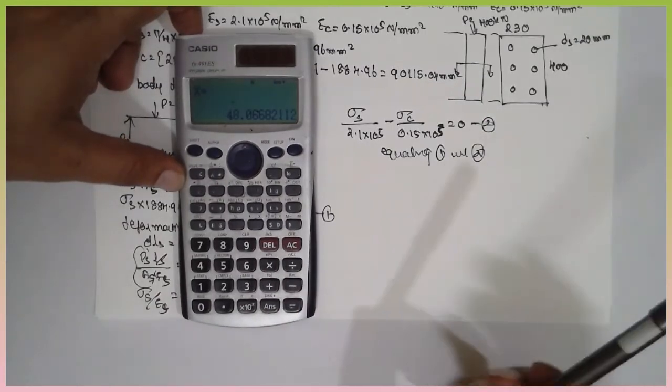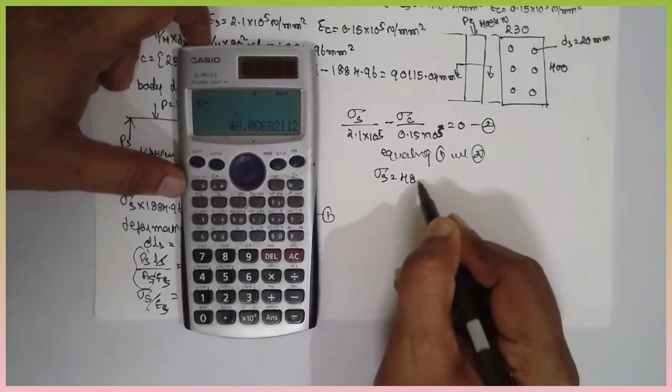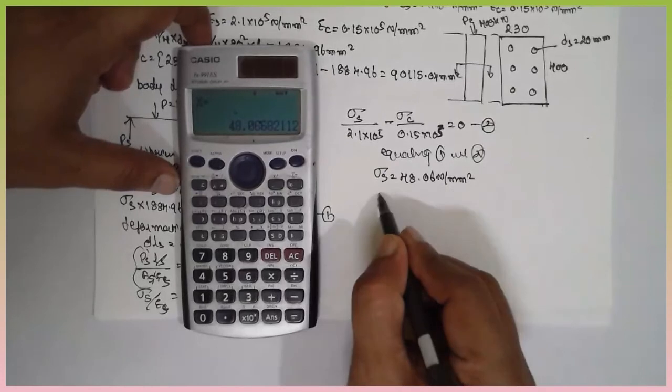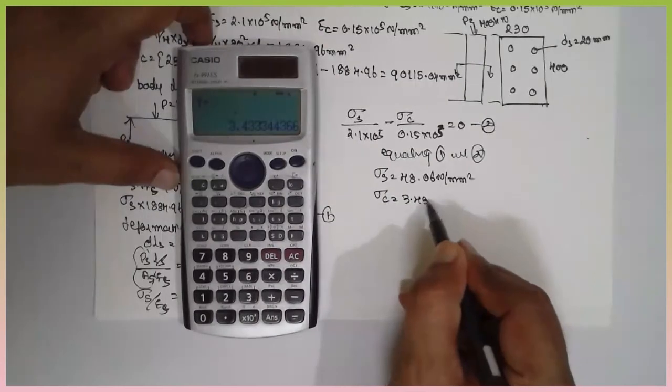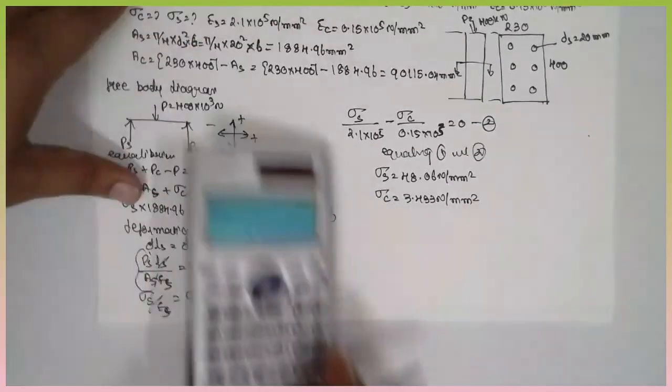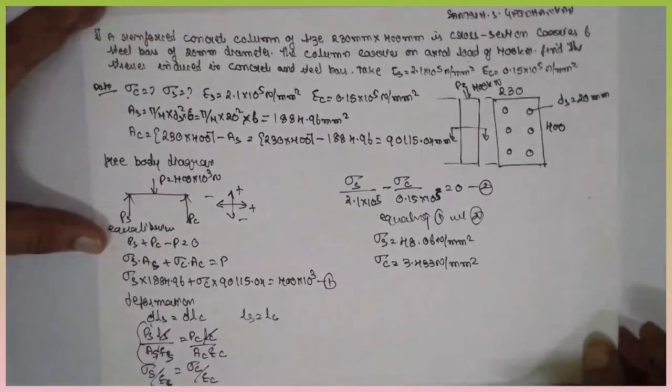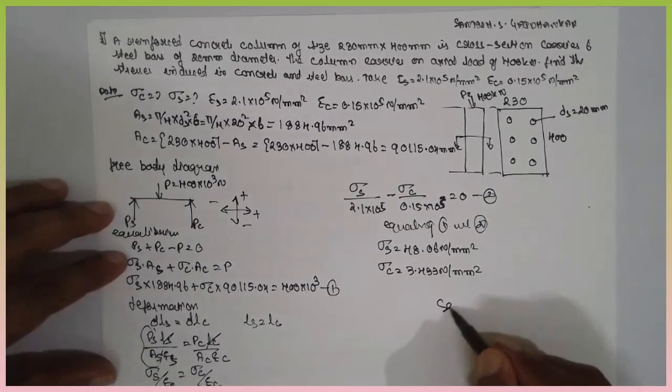The answer is sigma s is equal to 48.06 Newton per mm square and sigma c is equal to 3.433 Newton per mm square. In this way, you can solve the problem of the concrete. I am Sotosh Gagankar. Thank you very much.